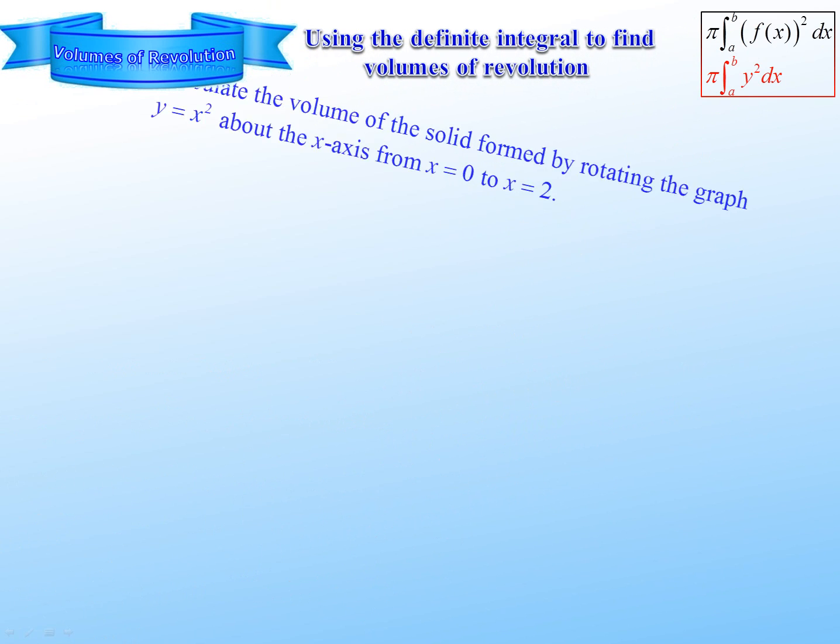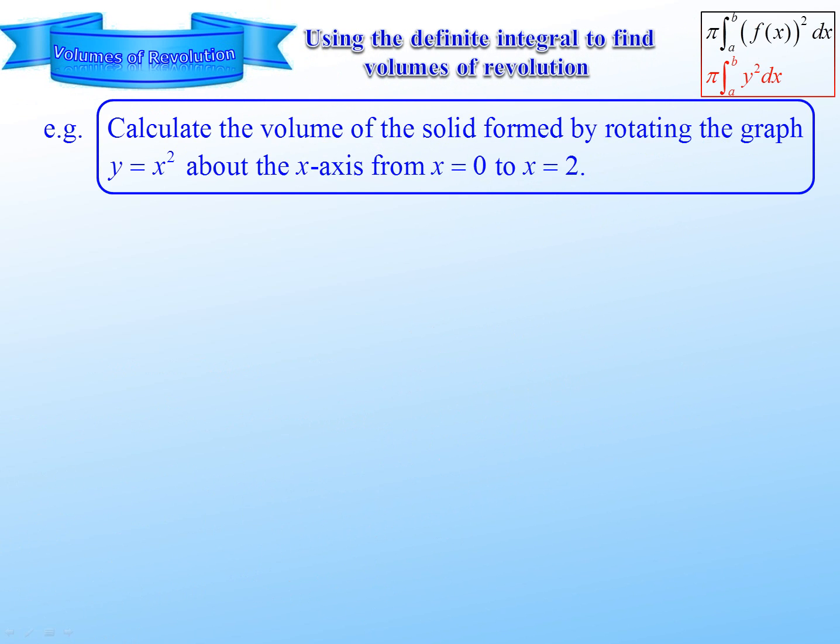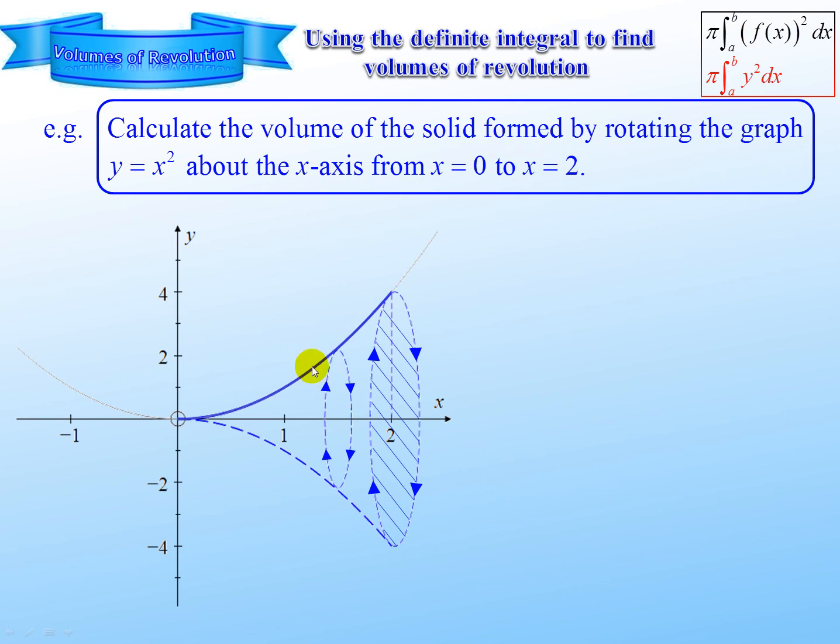Let's have a look at an example. So we are going to take the graph of y equals x squared from x equals 0 to x equals 2, and we are going to rotate it around the x-axis.